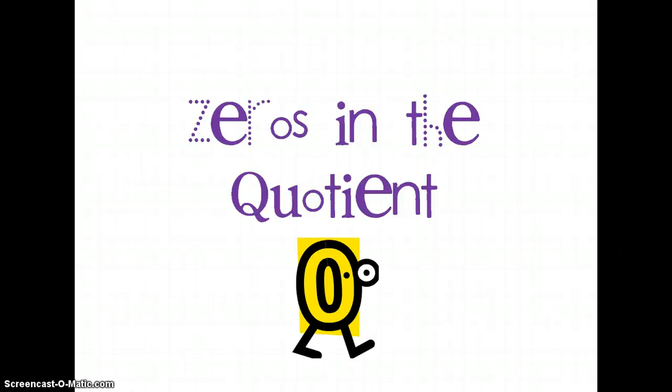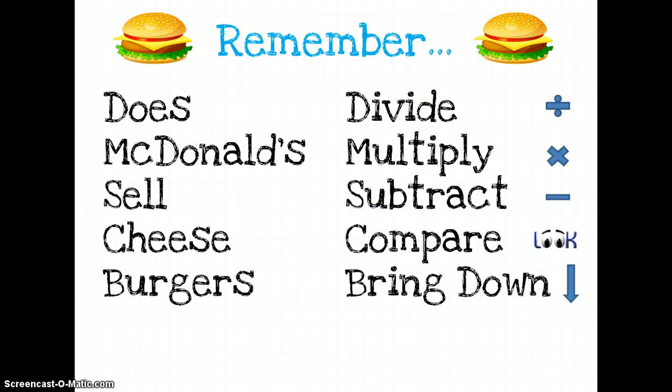This lesson is about zeros in the quotient. Now remember, when we do long division, we use the saying does McDonald's sell cheeseburgers, which stands for divide, multiply, subtract, compare, and bring down.